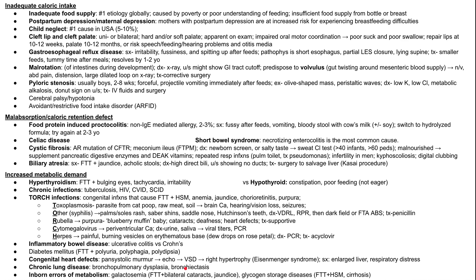Now let's look at the differential for failure to thrive. There are three broad categories. Starting with inadequate calorie intake: first is inadequate food supply, the number one etiology globally, caused by poverty or poor understanding of feeding — insufficient supply from the bottle or breast. Second is postpartum or maternal depression, which increases risk for breastfeeding difficulty. Third is child neglect, the number one cause in the United States, accounting for 5% to 10% of cases.